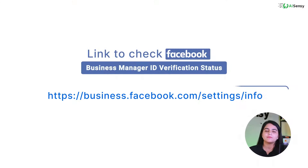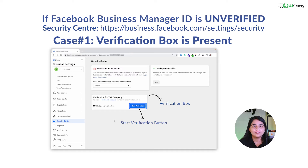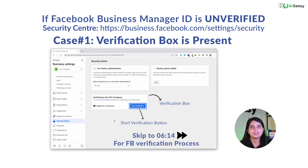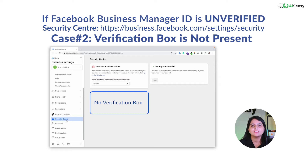Now let's jump to the Security Center option on the left panel of your Facebook Business Manager. In this page, either you will see the verification box with the start verification button, or you will not see any box under the two-factor authentication section. In most cases, the box is not there. If you have the verification box and the start verification button is activated, meaning you can click on that button, then you're good to go with the verification process and can go to the next chapter. If you do not find any verification box, then there are some steps that need to be followed to get that box to appear.